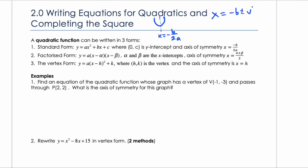Recall x equals negative b plus or minus the square root of b squared minus 4ac, all over 2a — that's the quadratic formula. The axis of symmetry is always halfway between the two x-intercepts. If you average the plus version and the minus version, the square root terms cancel and you end up with negative b over 2a. That's how you get the axis of symmetry in standard form.